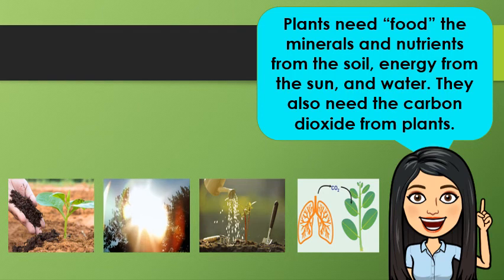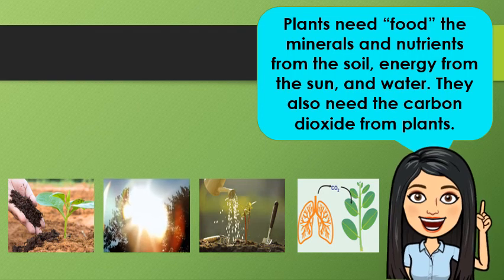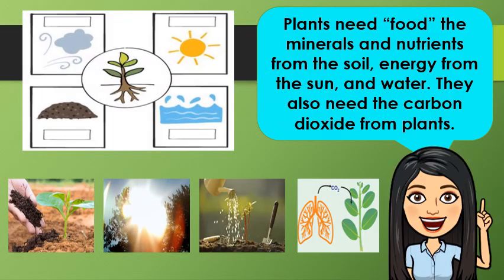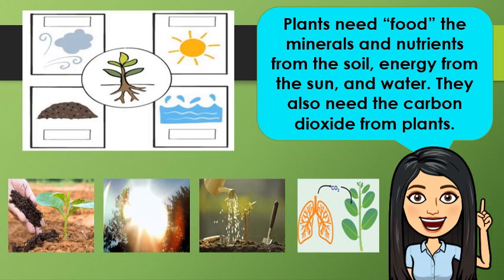Plants need food — the minerals and nutrients from the soil, energy from the sun, and water. They also need carbon dioxide from the air. These are the basic needs of plants for them to make their own food.